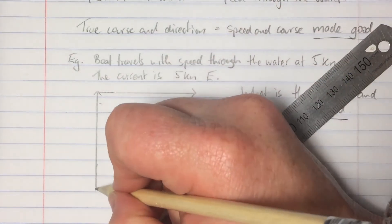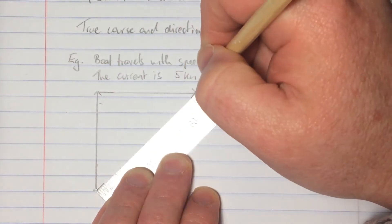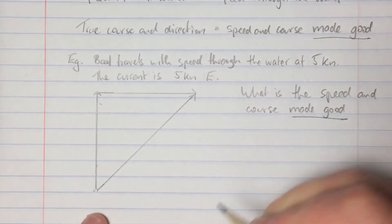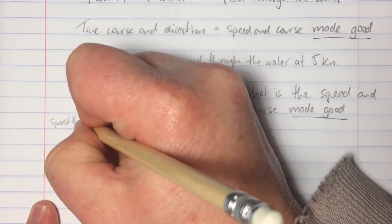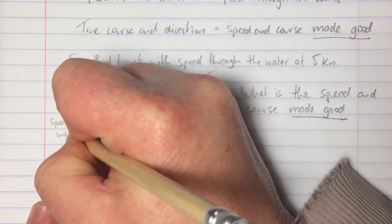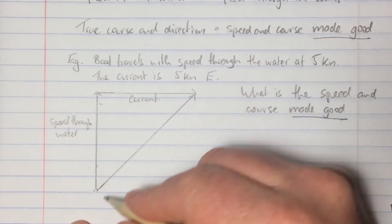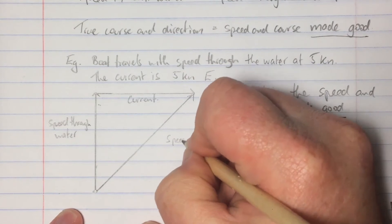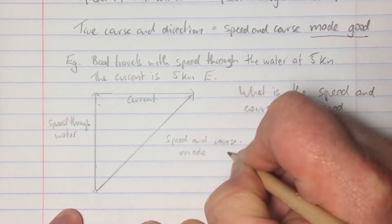So what we're going to do is draw a line that starts at the beginning of where our boat started and finishes at the end of where the current started. So this is the speed through the water, this is the current, and this line here that we've just drawn in is the speed and course made good.